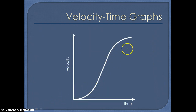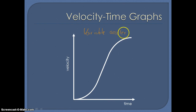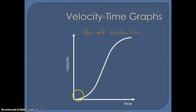The key points to know about velocity-time graphs: the gradient of a velocity-time graph equals the acceleration. A negative gradient means you're decelerating. The area under a velocity-time graph equals the distance travelled. If the area is below the x-axis, you're travelling back towards the starting point. A curved velocity-time graph means you have a variable acceleration.